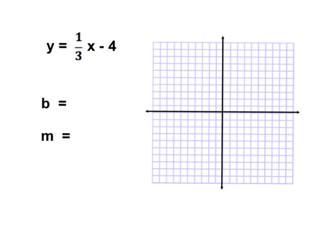Let's look at an example. Our slope-intercept formula is y equals mx plus b. In this case, b is negative 4, which means we're going to put our starting point on the y-axis at negative 4.